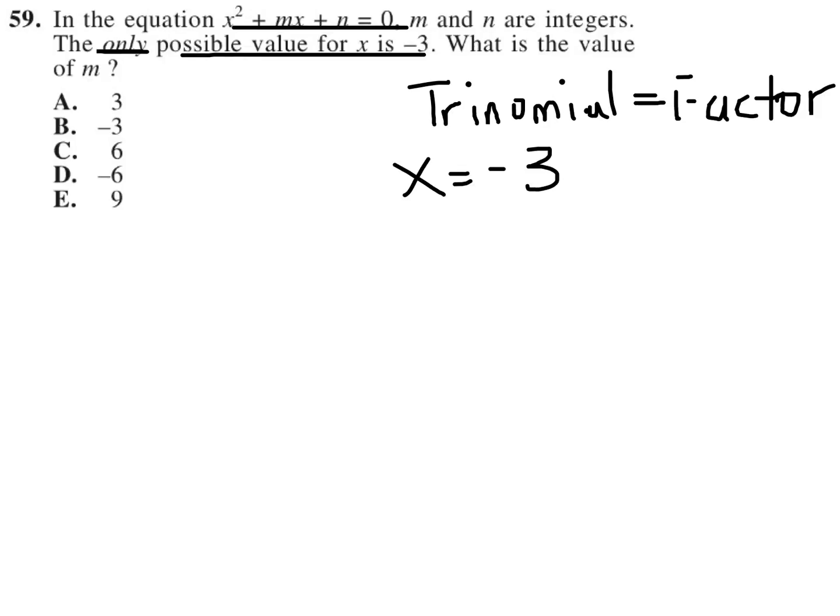Well, first of all, how do you factor a trinomial? Well, any trinomial, if it is factorable, you're going to end up with two sets of parentheses. And of course, in this case, equaling 0.